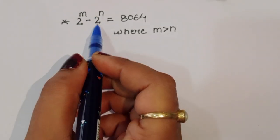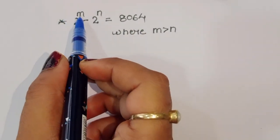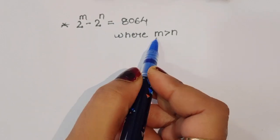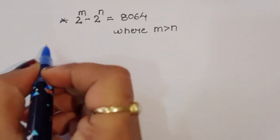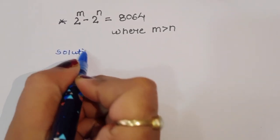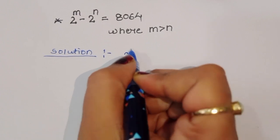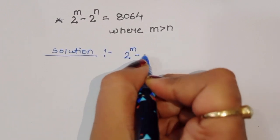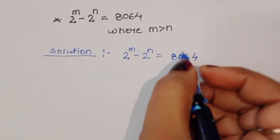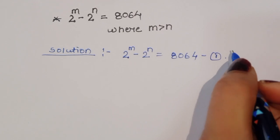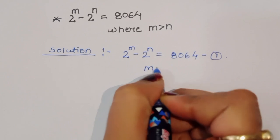The question is: given 2 power m minus 2 power n is equal to 8064, we have to find out the value of m and n, where the condition is m is greater than n.